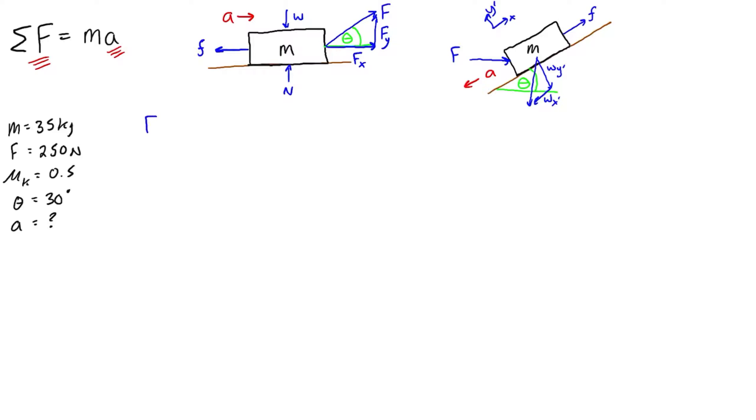So let's first break down F into its components, fx and fy. fx is just simply going to be 250 cos 30, which is going to be 216.5 newtons. fy is 250 sine 30, and that is just 125 newtons.